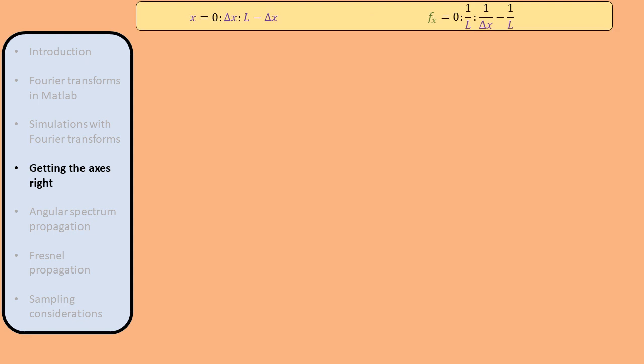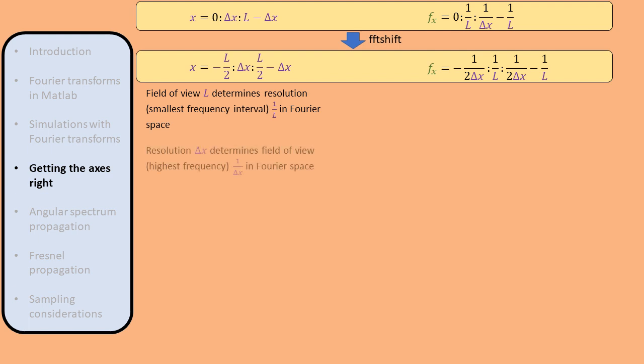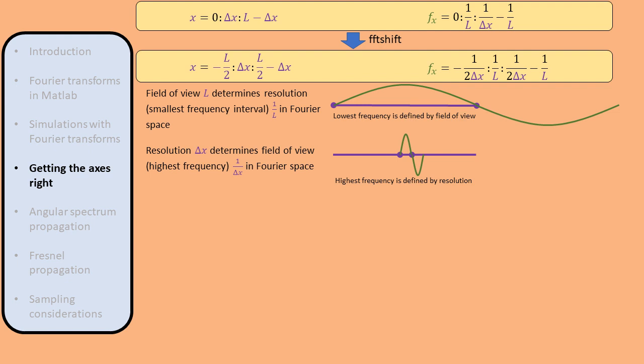These axes assume the origin lies at the edge of the vector or corner of the matrix, but we typically use FFTshift to shift the origin to the center. An important conclusion is that the field of view in object space determines the resolution in Fourier space, and conversely, the resolution in object space determines the field of view in Fourier space and the highest frequency that can be defined. To increase the resolution in Fourier space, we increase the field of view in object space by extending the object with zeros — called zero-padding.